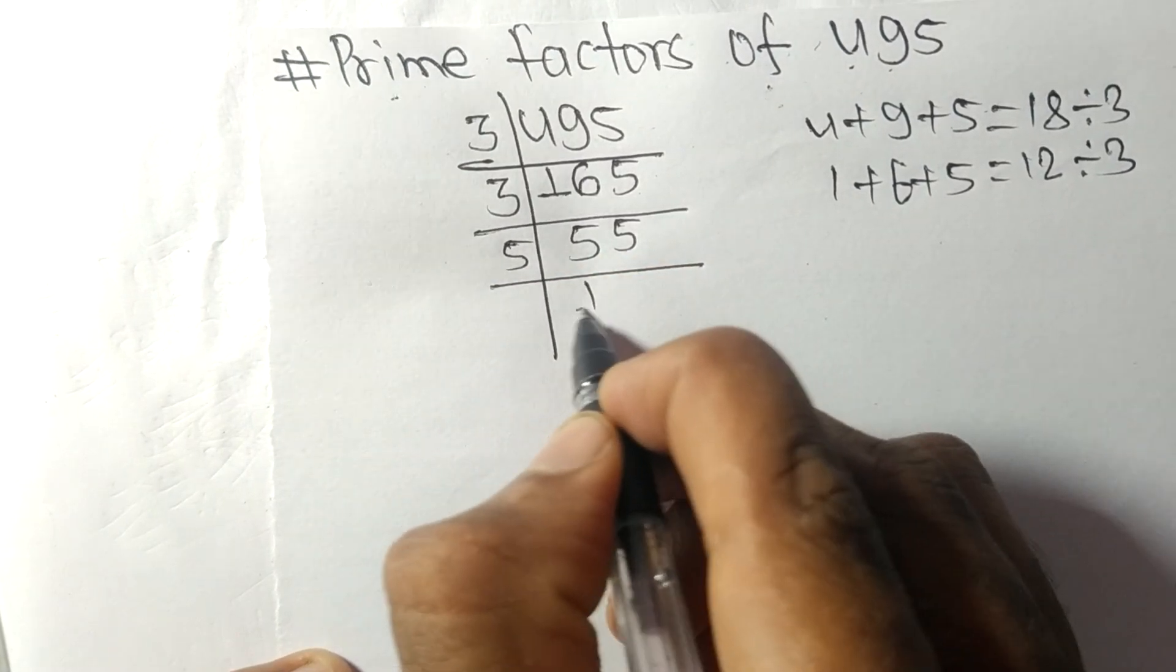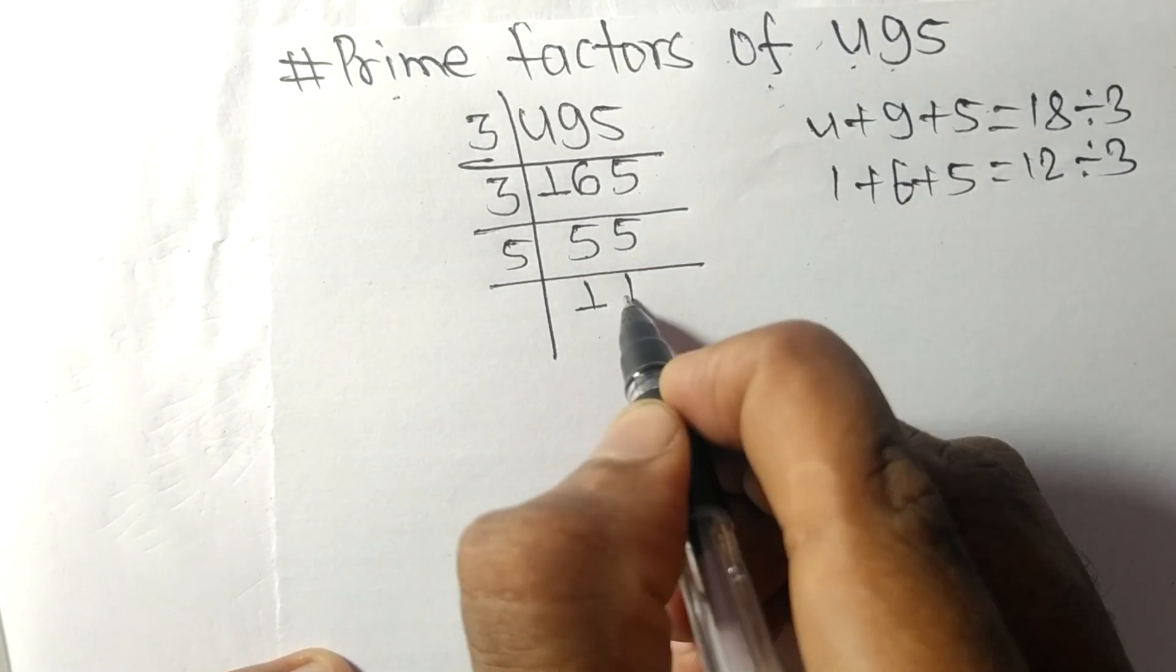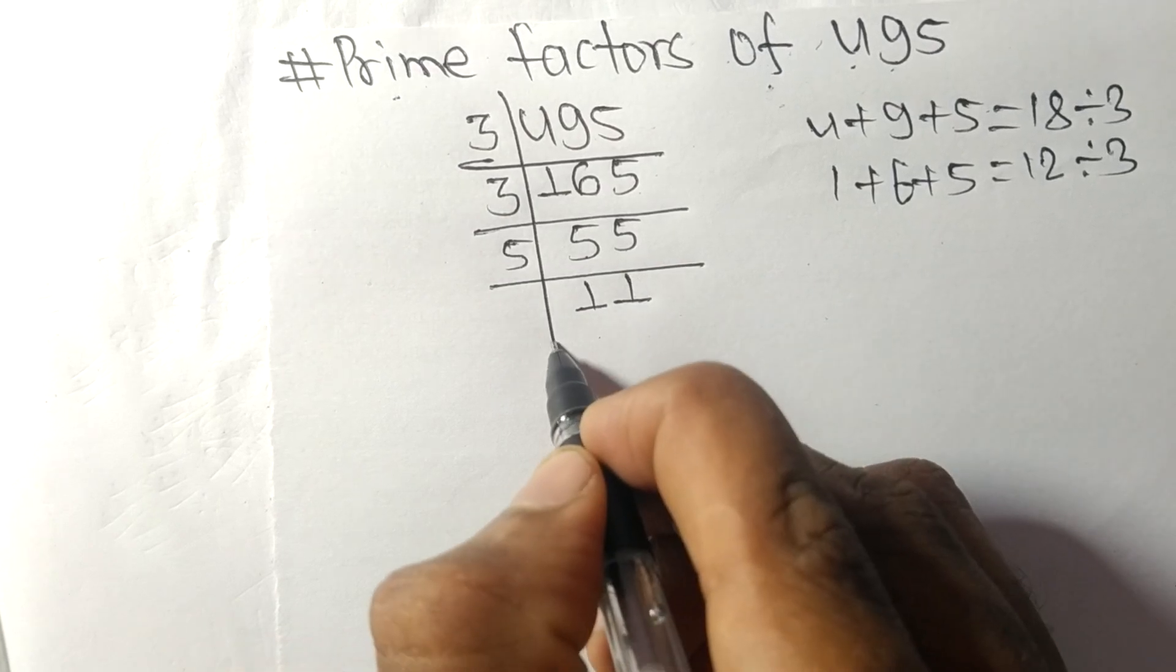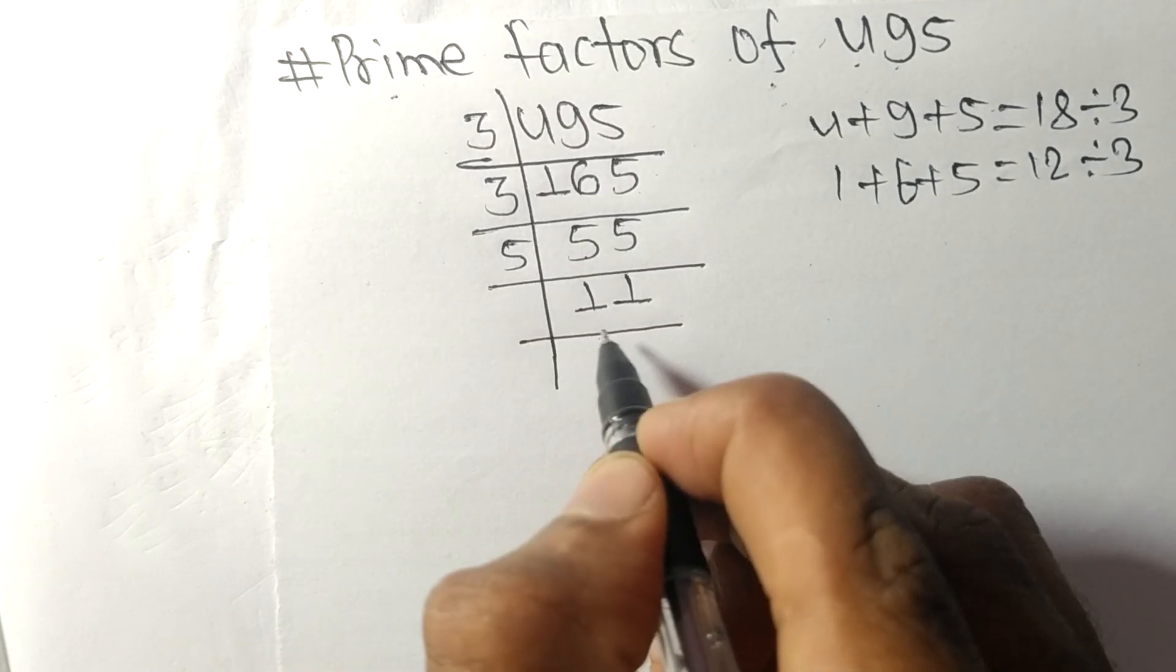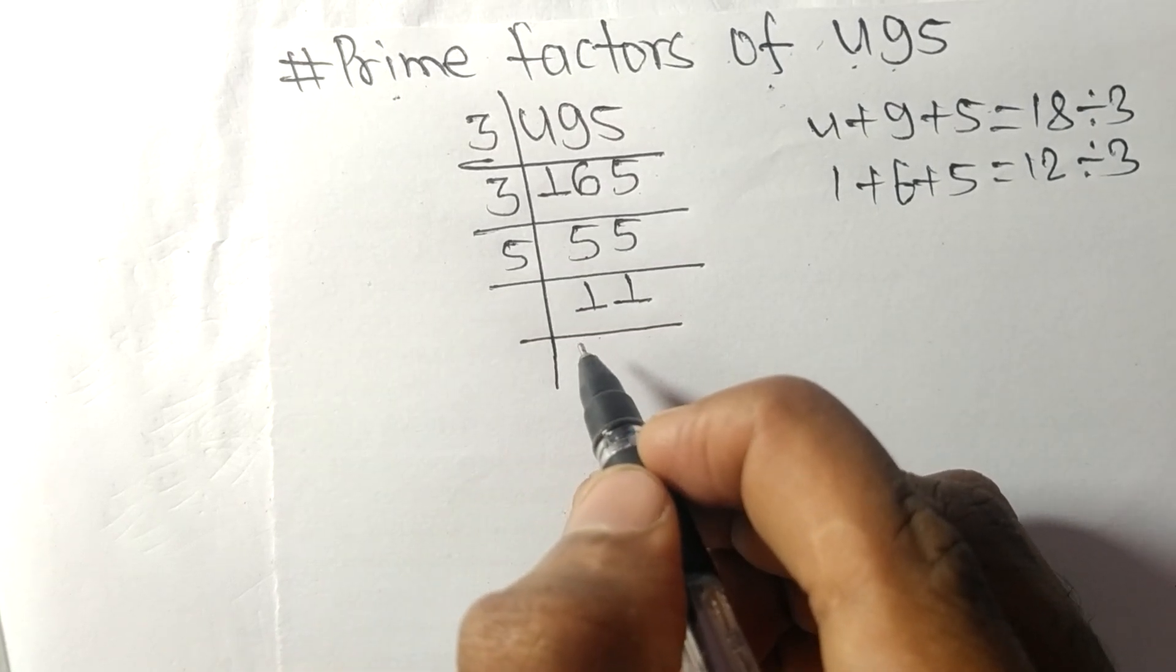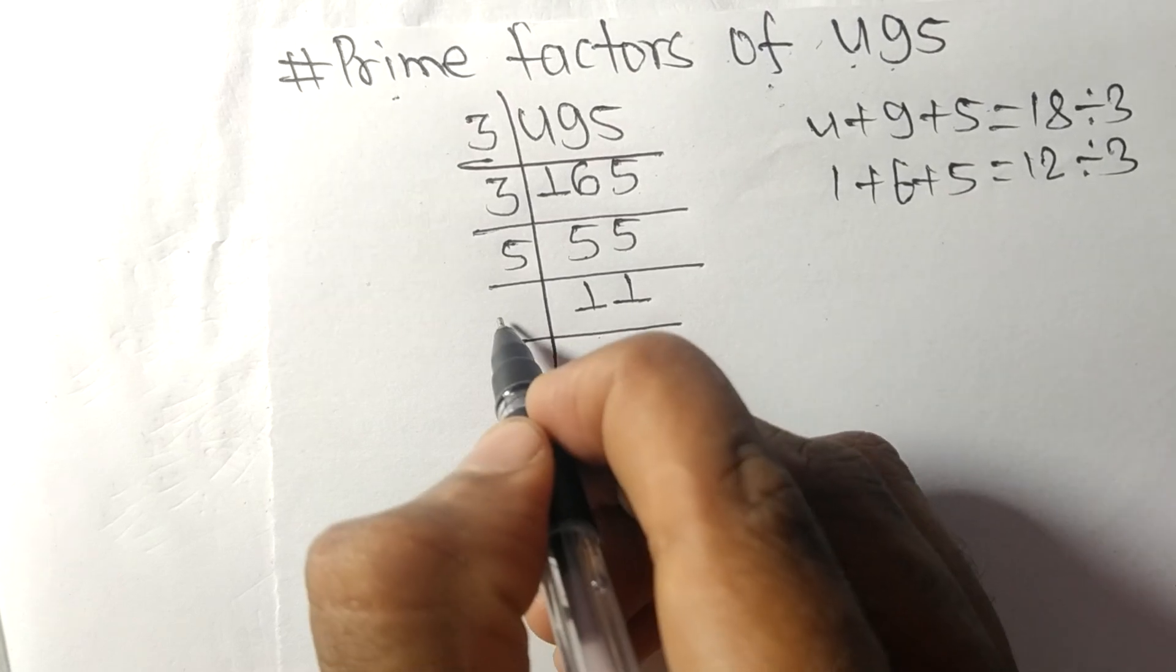5. 5 times 1 equals 5. 5 times 1 equals 5. Now we got 11 which is a prime number, so it is divisible by